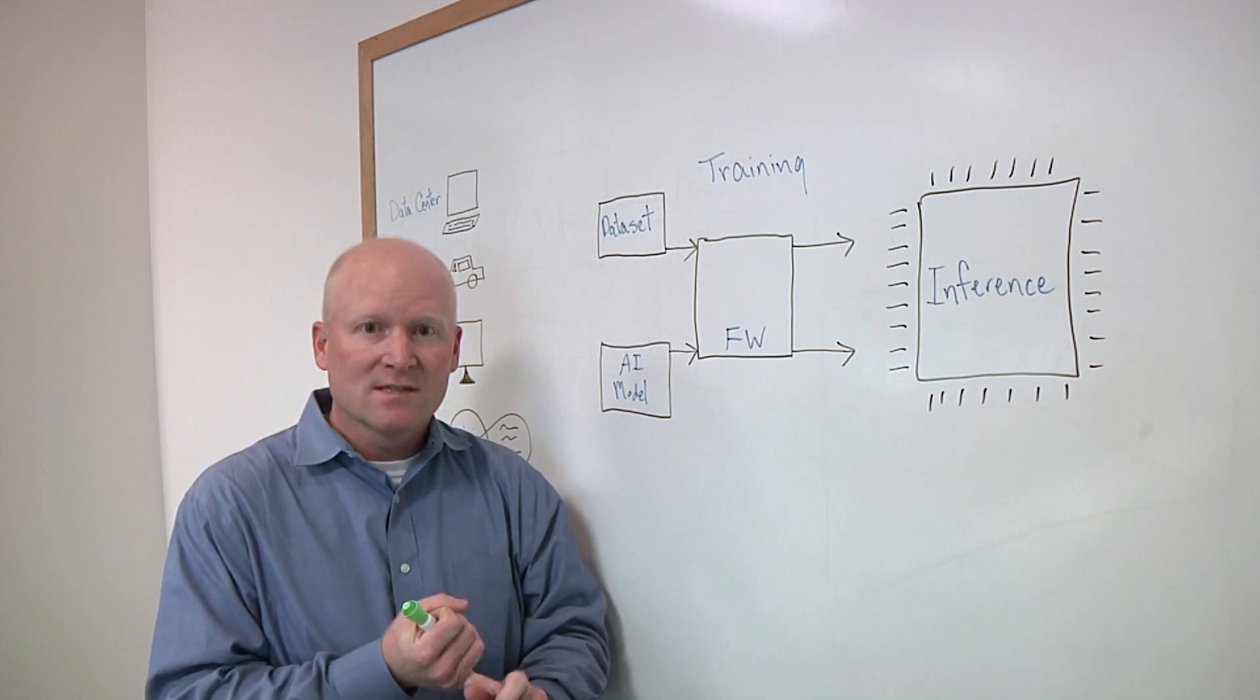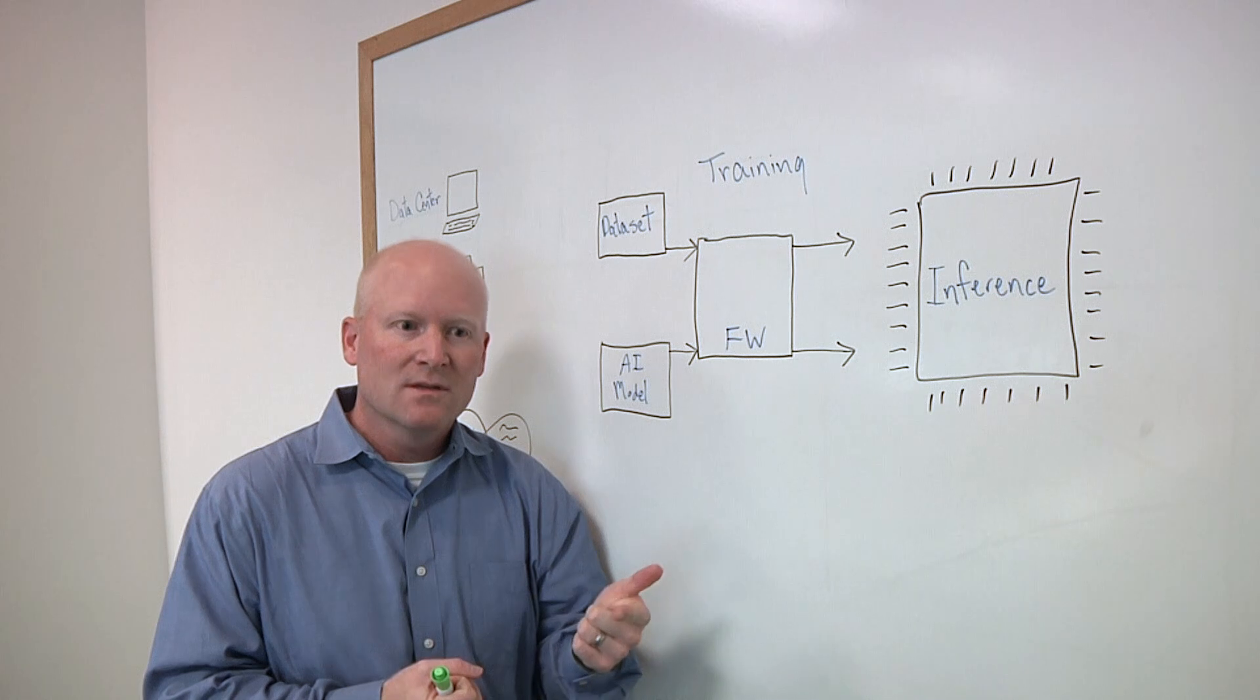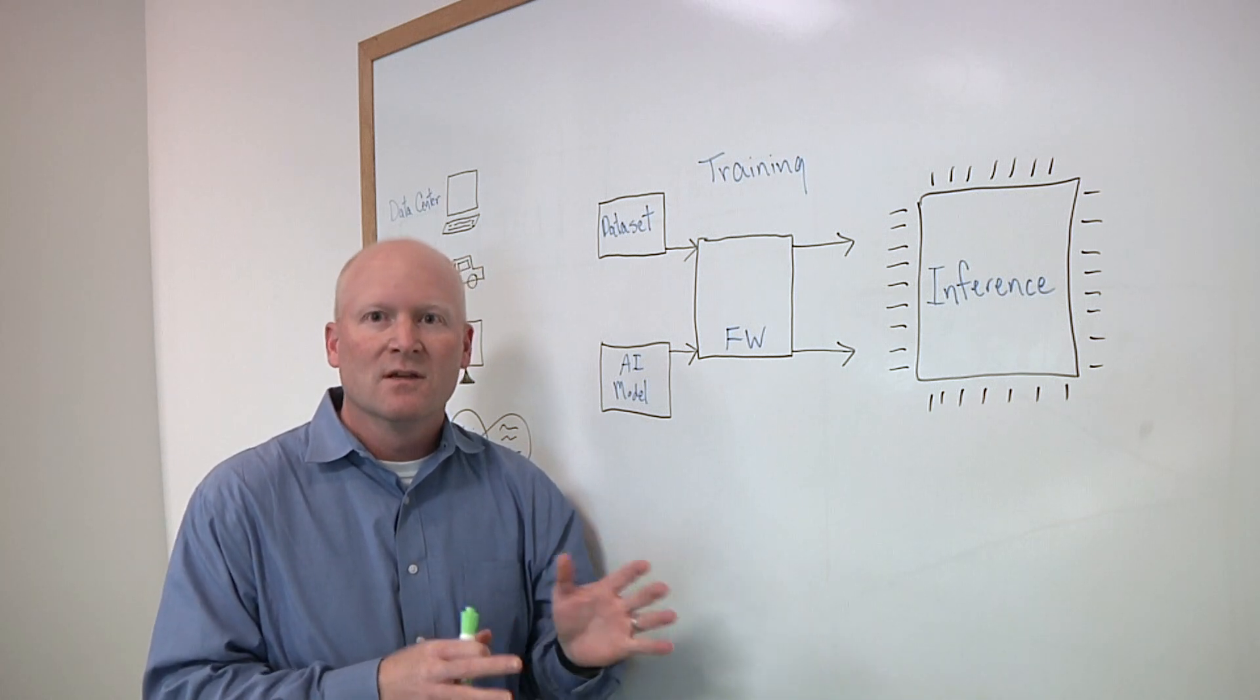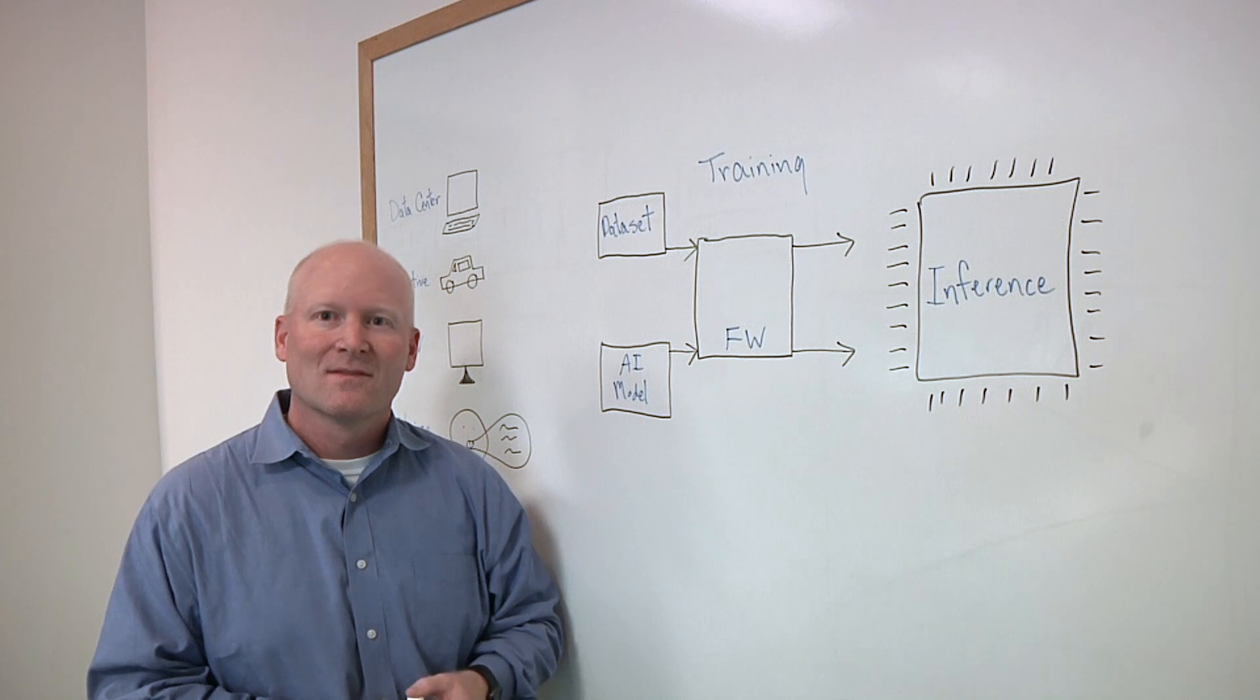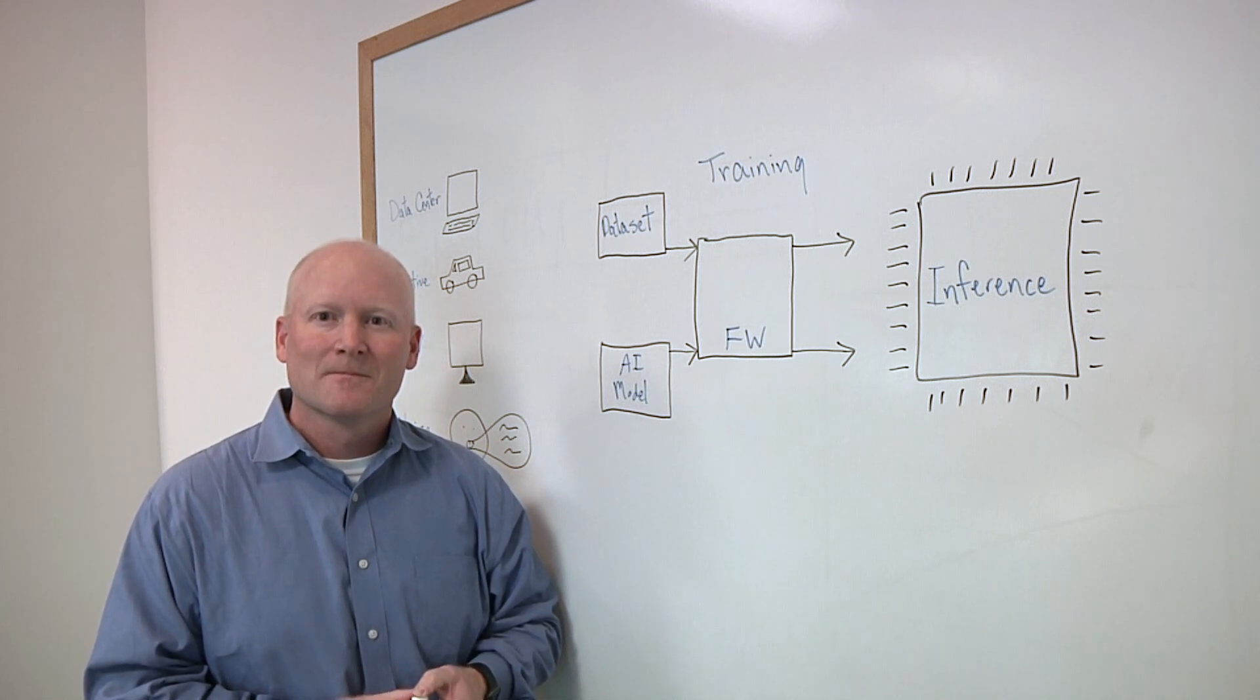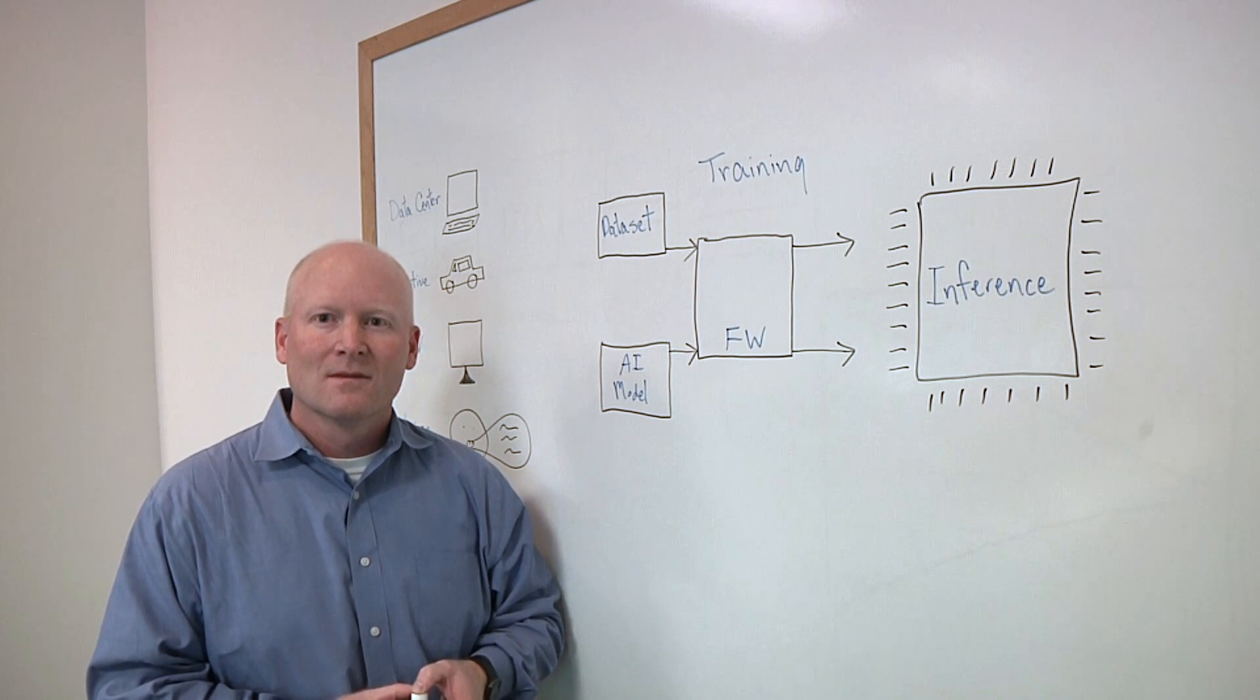And there are really three components. The first one is processing power. The second one is memory constraints. And this is in the form of capacity, the form of bandwidth, as well as latency. And then the final thing is real-time connectivity. Those types of things are absolutely required to handle these inference applications. So this is going to drive a lot of the push down to 7 nanometers, 5 nanometers, right? Because we need that kind of both density in terms of processing as well as the lower power that potentially this can bring.